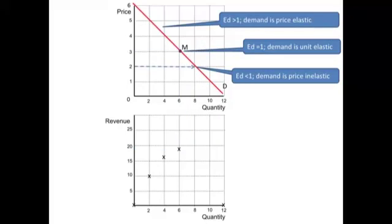Down to $2 we have 2 times 8 is 16. So the revenue has now fallen when we get to the right of point M. Mark that with an X.